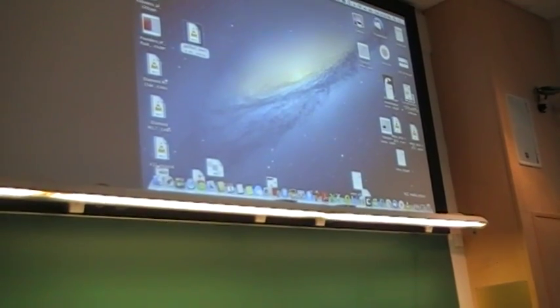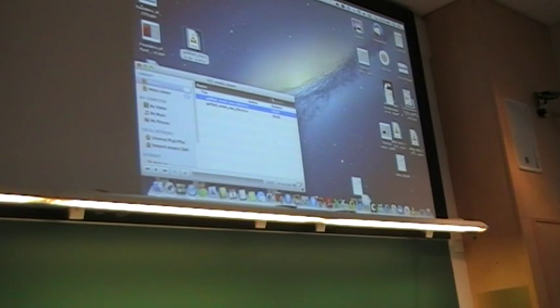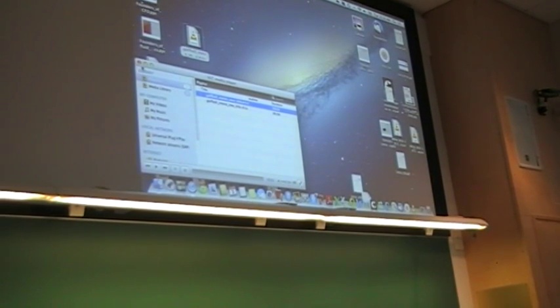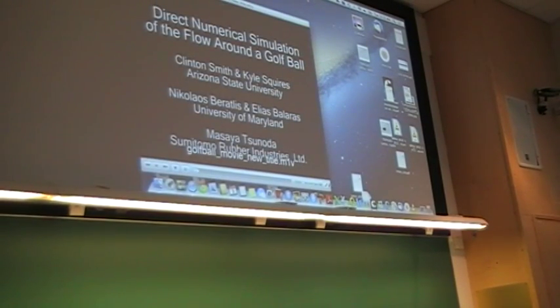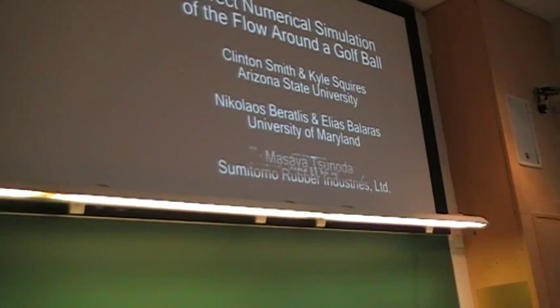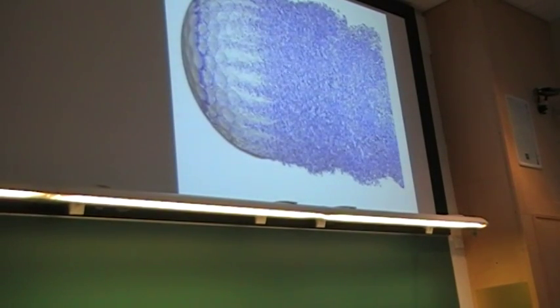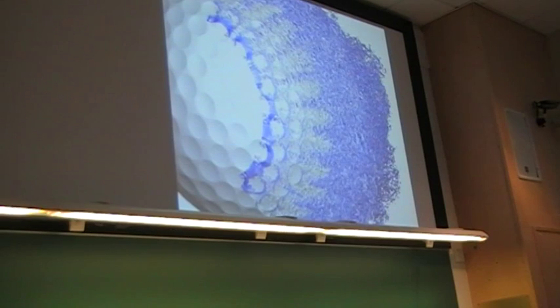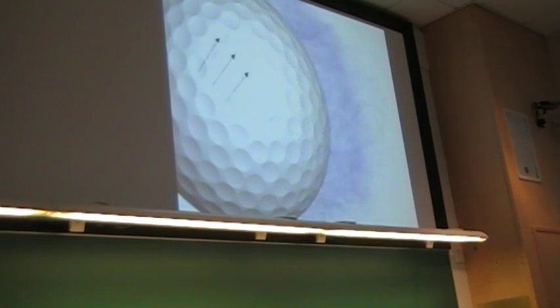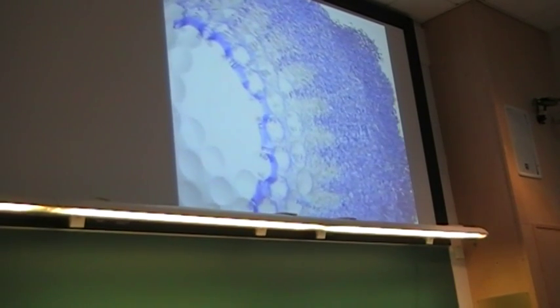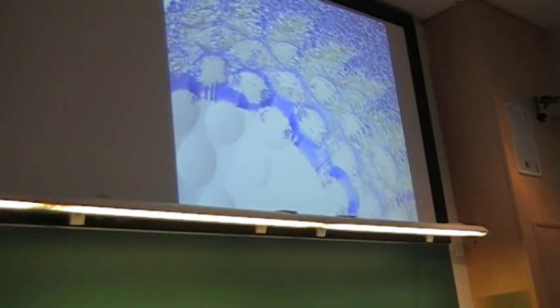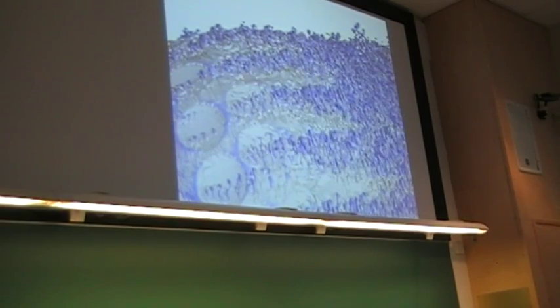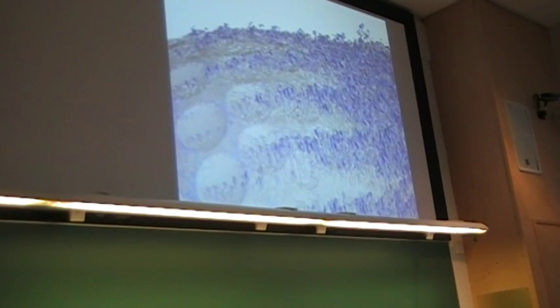Before coming to that, I want to show another example of a direct numerical simulation — this one of a golf ball. It is from Arizona State University; Balagas and his team made the simulation. Again solving the incompressible Navier-Stokes equations with 1.2 billion grid points. The Q criterion is used to visualize the vortices, colored with the spanwise vorticity, and you can see the dimples on the golf ball and the turbulent structures evolving in the flow.